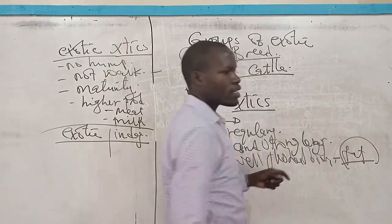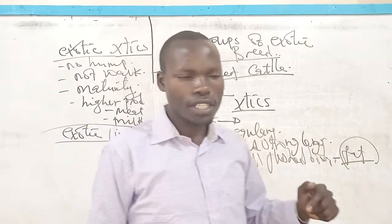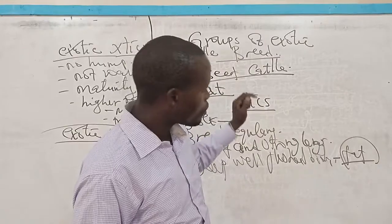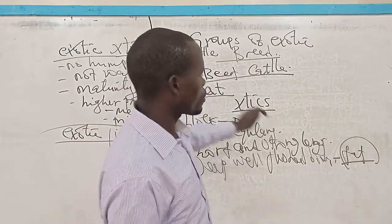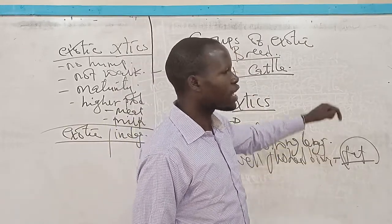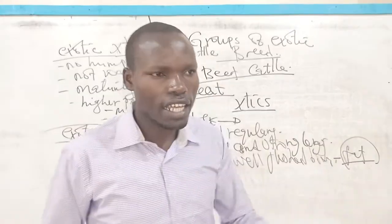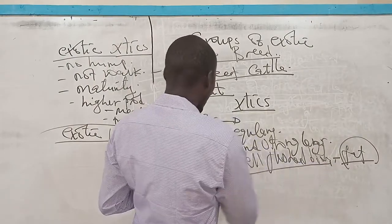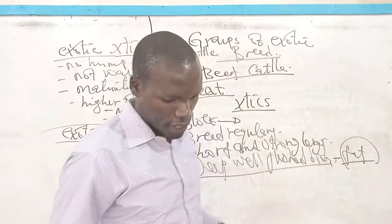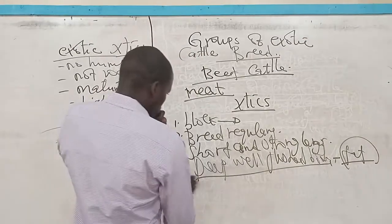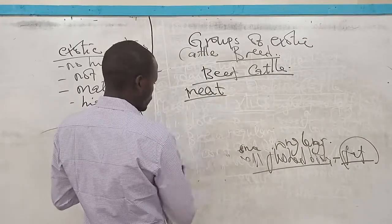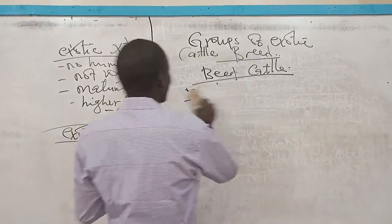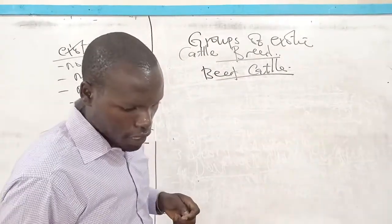They have big, well-fleshed body. And this flesh in them has a lot of fat. Remember, as we said, the dairy cattle, their bodies are lean because they lack fat which is being reduced in the synthesis of the milk. In the beef cattle, this is an opposite because the excess feed or else that fat in the body is being converted and that's why their bodies are deep and also well-fleshed.